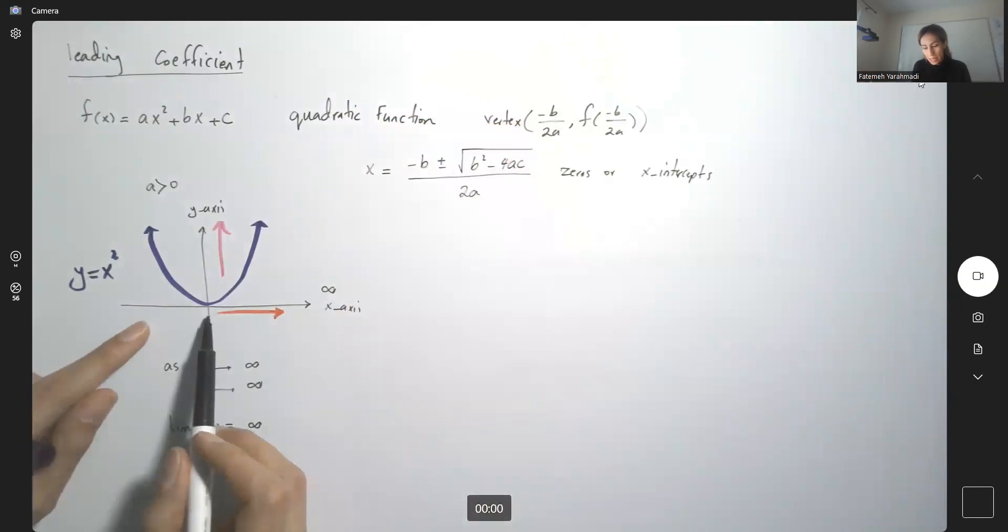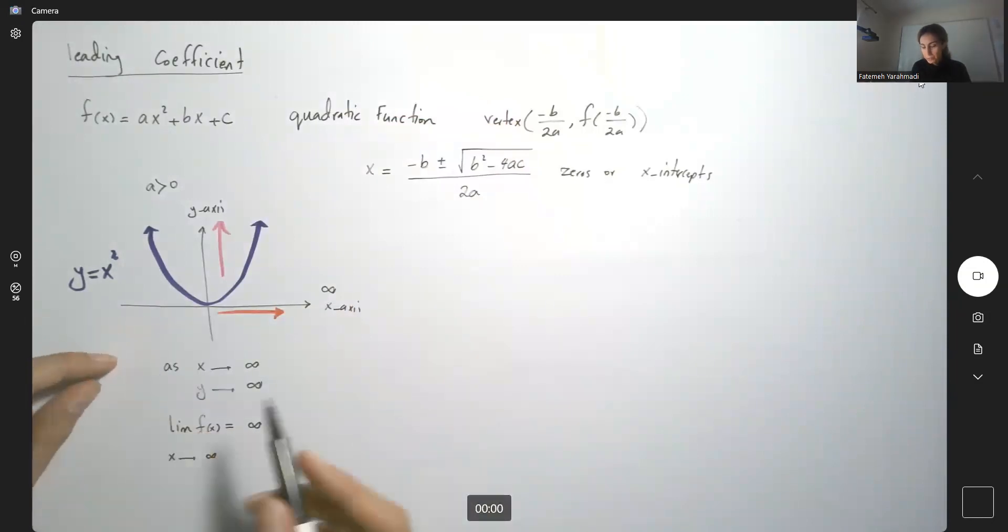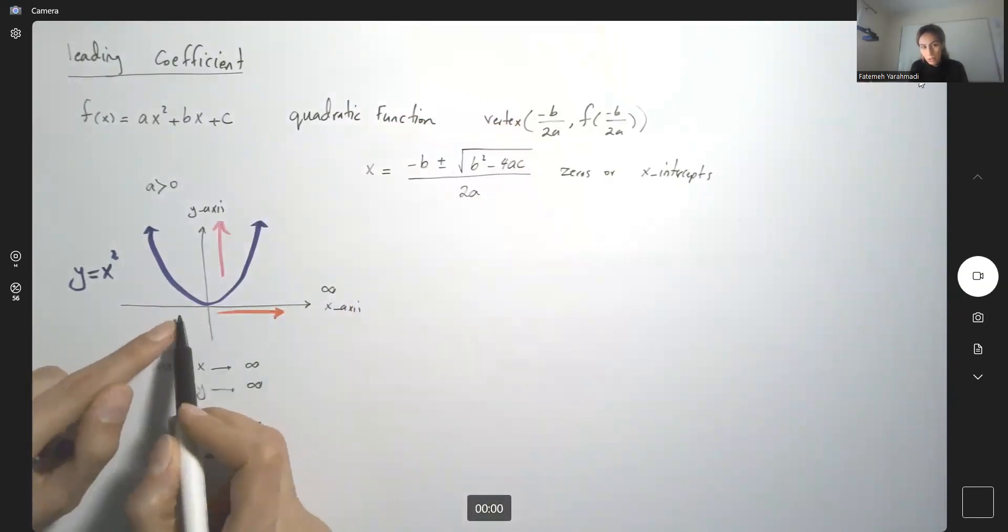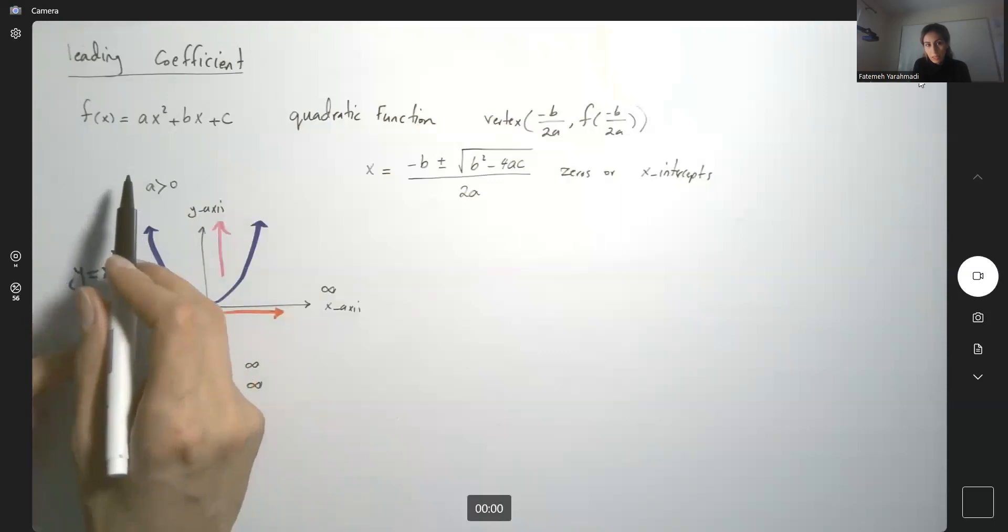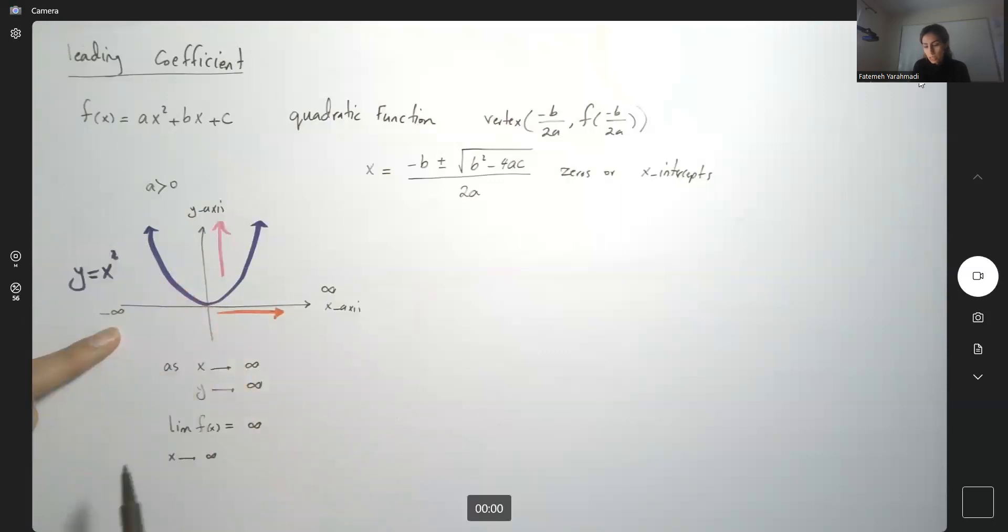What happens when x goes to the opposite direction? As x approaches negative infinity—remember that negative infinity is on the left-hand side—we look at the behavior of the function. The function again goes to positive infinity.